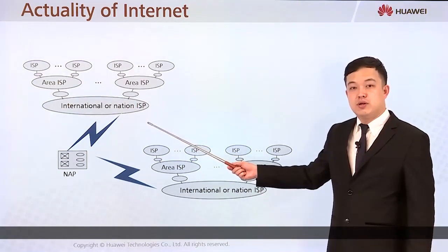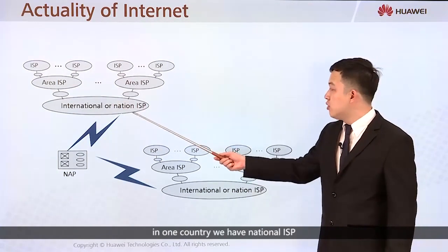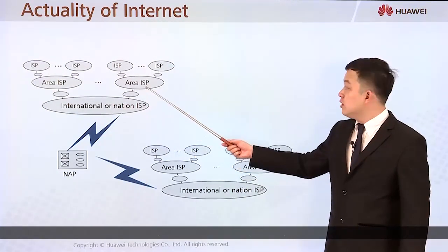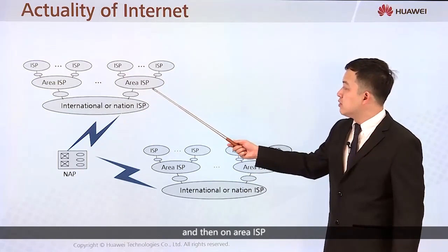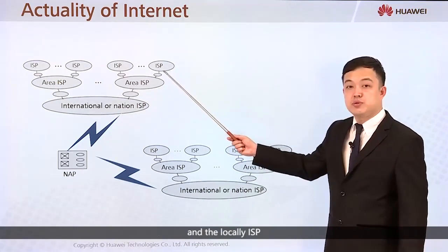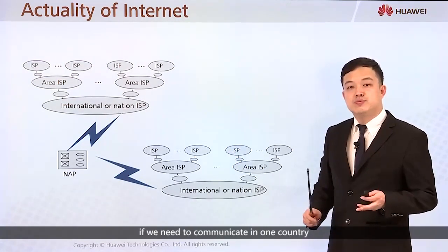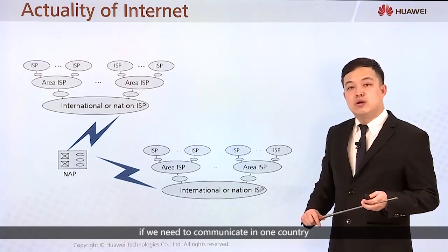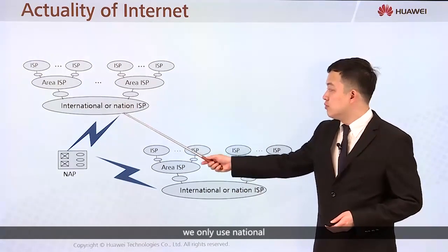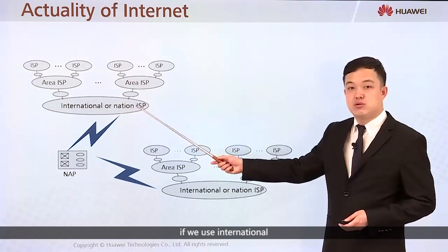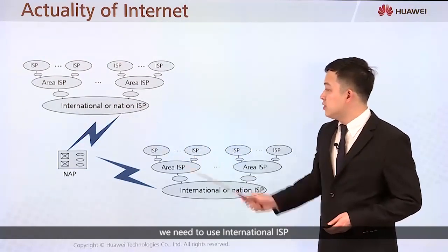Within one country we have national ISPs, then area ISPs, and then local ISPs. If we need to communicate within one country, we only use the national ISP. If we communicate internationally, we need to use an international ISP.